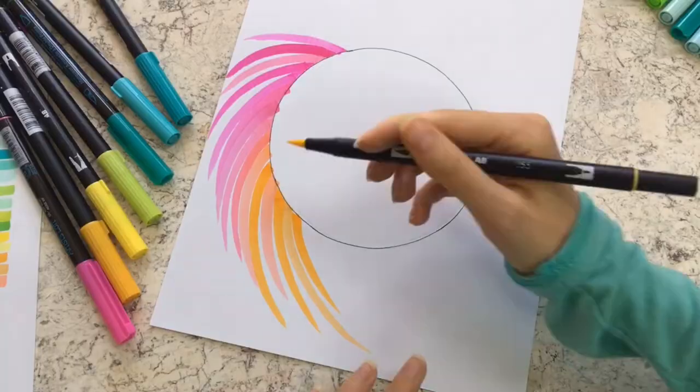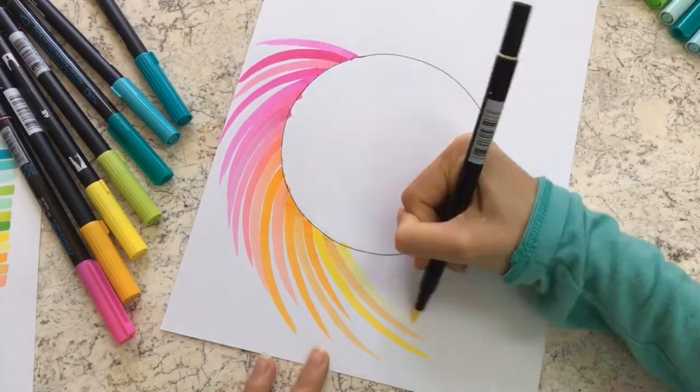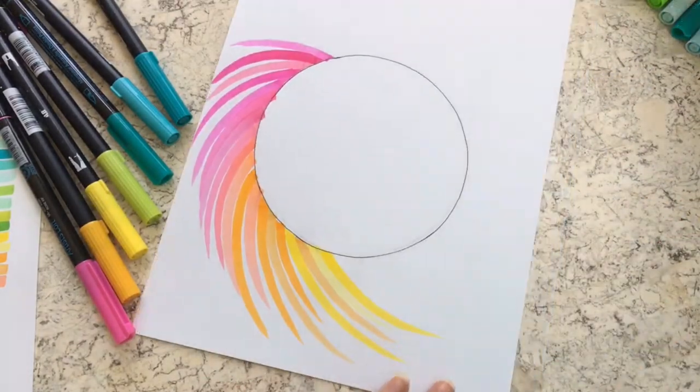Notice how I continue to color in the space between the spoke and the circle as I go along but again you don't have to do this if you don't want to.